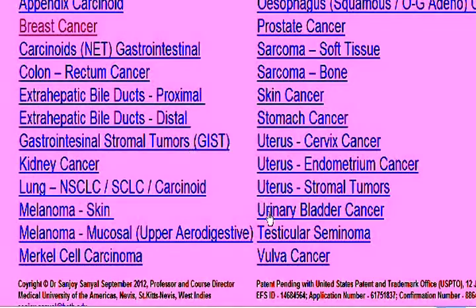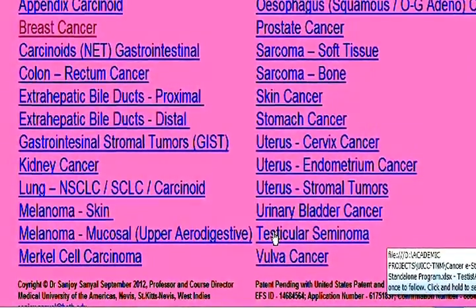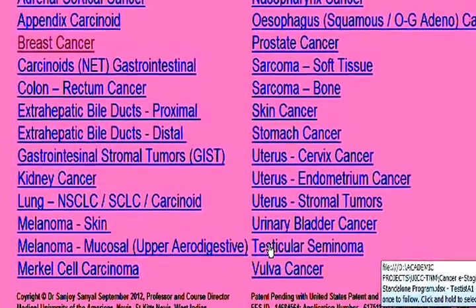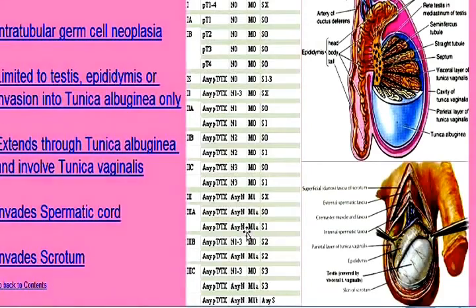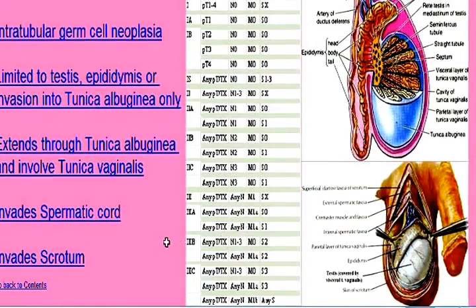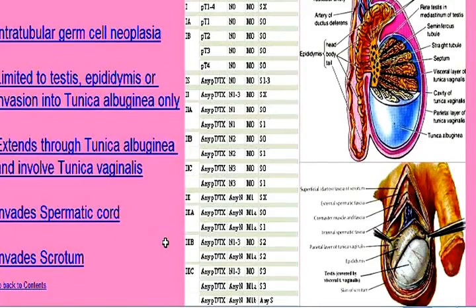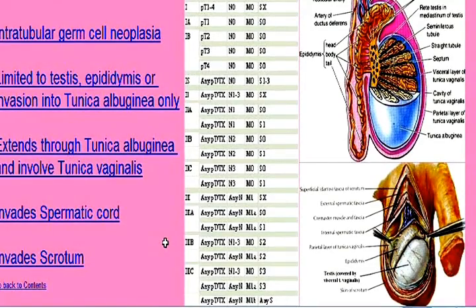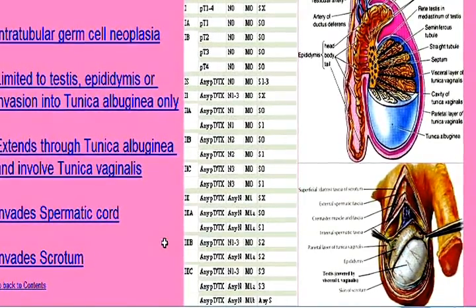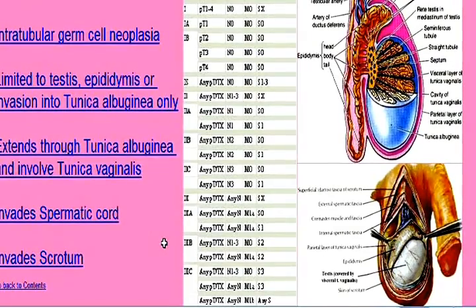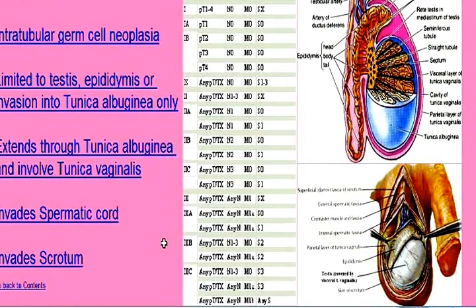This will bring us to the testicular seminoma tumor page. Let's say this patient has a tumor which is restricted to the testis itself and has not extended through the tunica albuginea. In which case, let's select option Tumor 1 — pathological tumor 1.